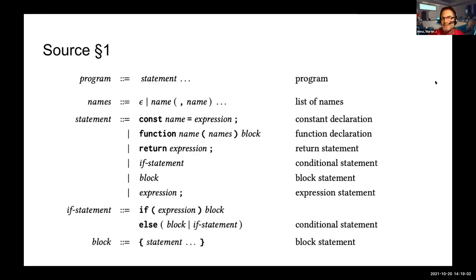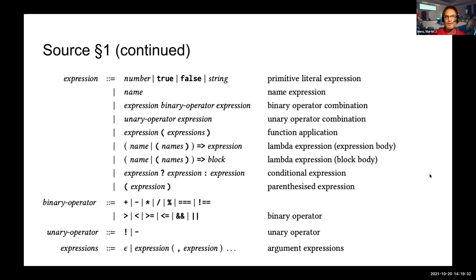Source Chapter 1 is the tiniest possible language you may want to use in a course. It has just what you need to do purely functional programming, including constant declarations and function declarations. It is a statement-oriented language like any other mainstream language today — block-structured and lexically-scoped. On the expression side, there's nothing surprising; we have lambda expressions as any modern language has.